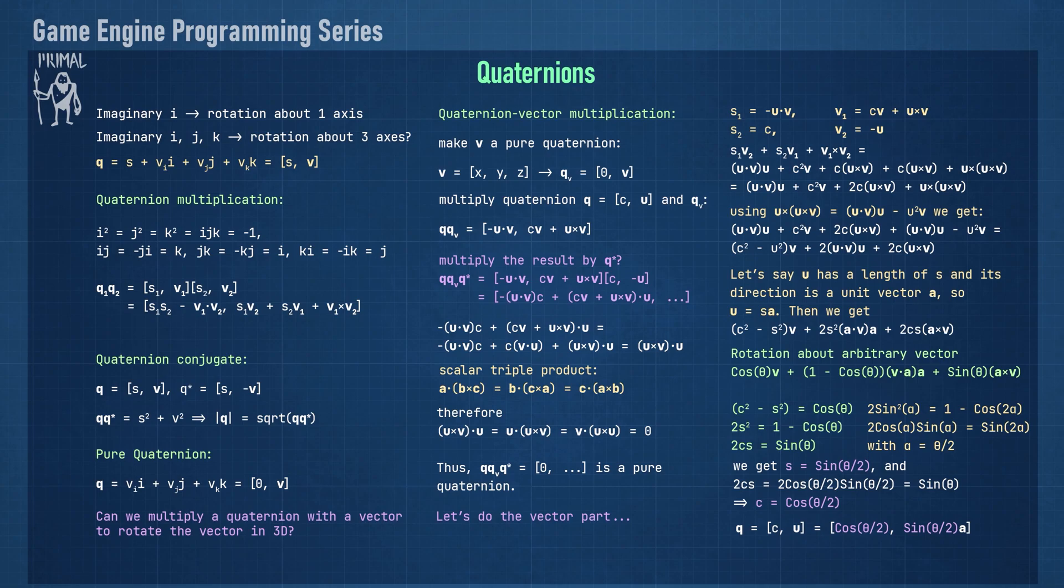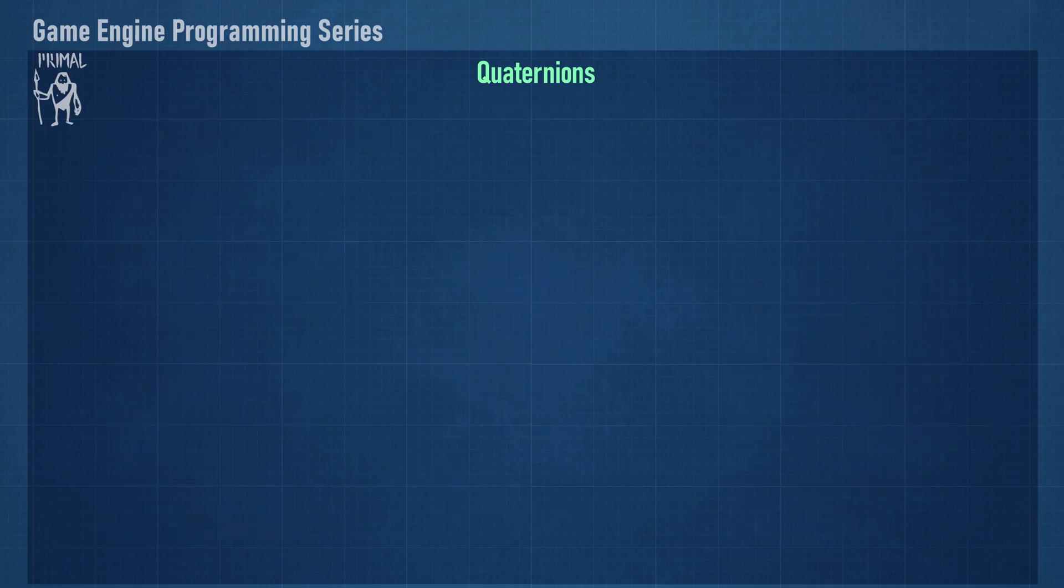I hope this derivation of rotation quaternions wasn't too difficult to follow, all we really did was apply a bunch of dot and cross products. I would encourage you to do the derivation on paper and fully write everything out, which really helps to understand the mathematics. One thing that kind of came out of nowhere is this multiplication with the quaternion conjugate, which I'd like to explain a little bit as to why we needed to do that. We're almost there, just bear with me a little longer.